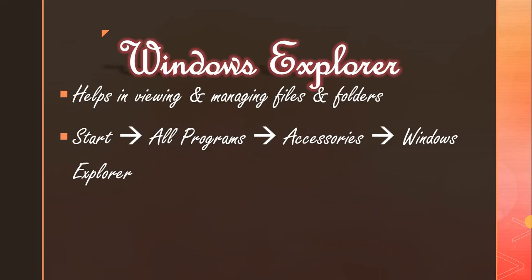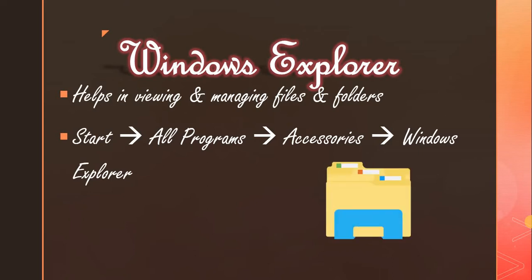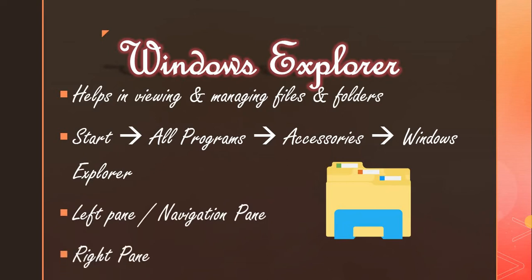You can also click the Windows Explorer icon on the taskbar. The Windows Explorer screen is divided into two panes — the left pane and the right pane. The left pane is also known as the navigation pane and it displays drives and folders. The right pane displays the files or folders present in the selected folder.